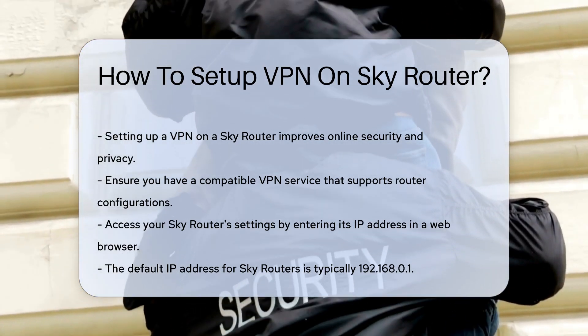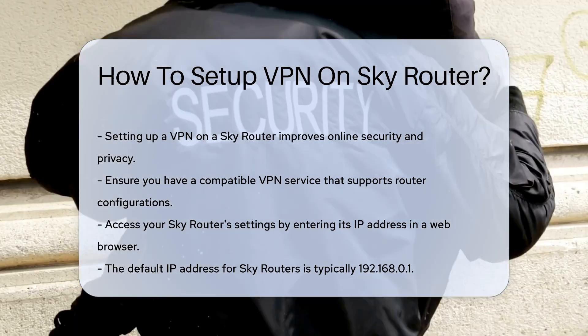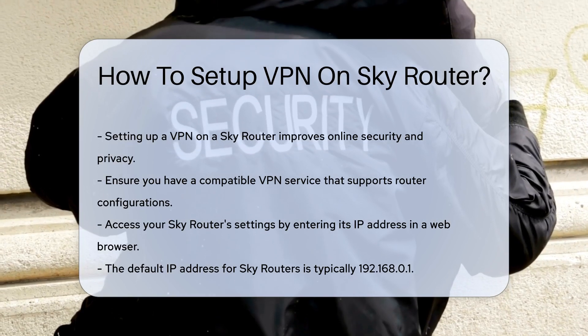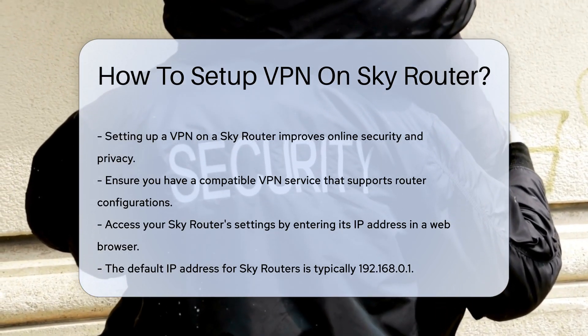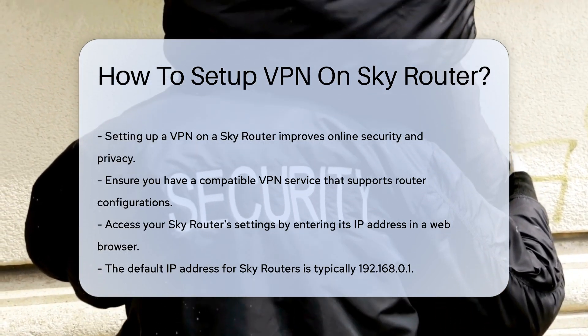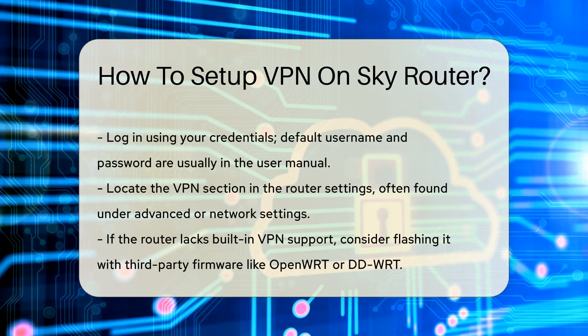This usually involves entering the router's IP address into a web browser. The default IP address for SkyRouters is often 192.168.0.1.